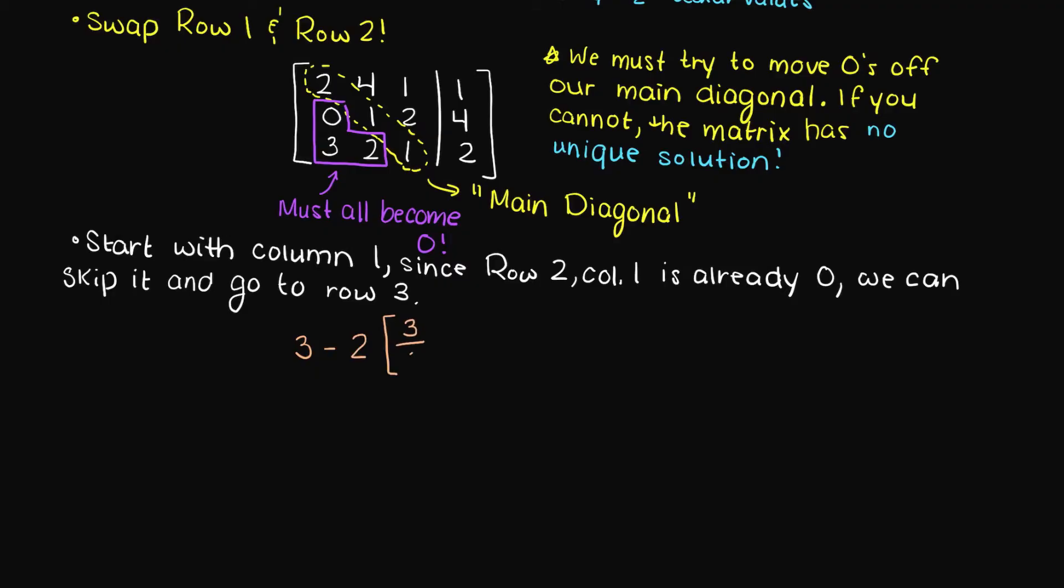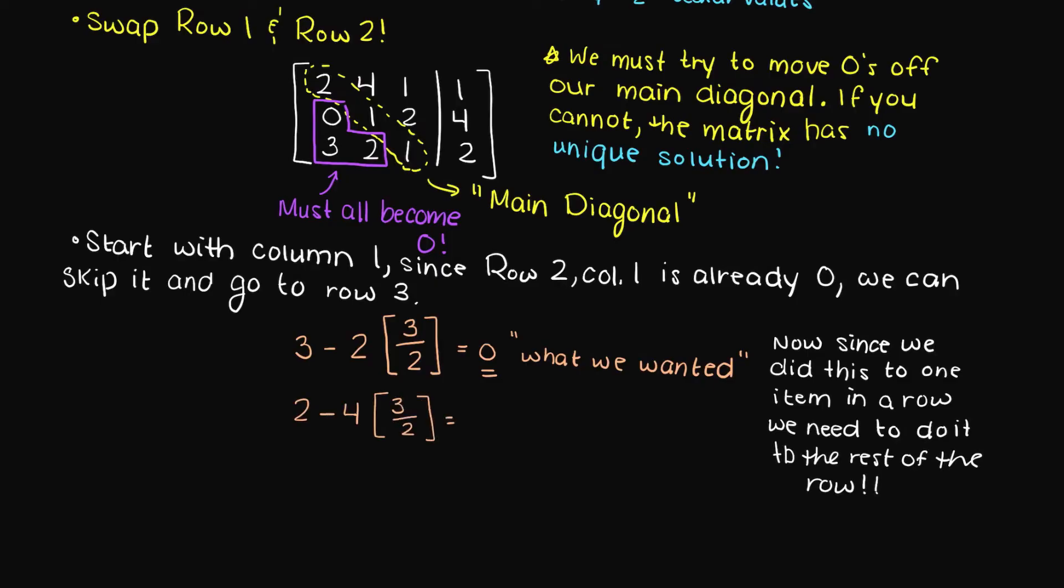We do this by scaling and subtracting and apply this to the rest of the row. This ensures that we can always get zeros in the areas that we want zeros. Now let's quickly do this for the rest of the row. Therefore, this is our current augmented matrix.